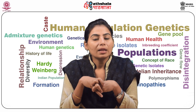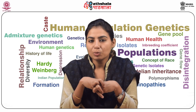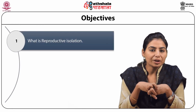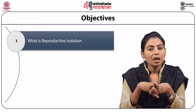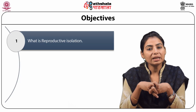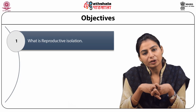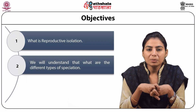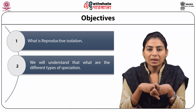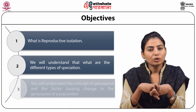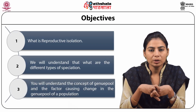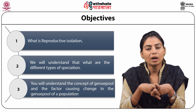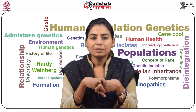Let's see what we are going to learn in this module. We will learn what is reproductive isolation and the process which leads to reproductive isolation. We will understand the different types of speciation. By the end of this module, you will understand the concept of gene pool and the factors causing change in the gene pool of a population.